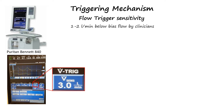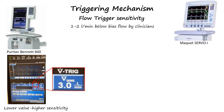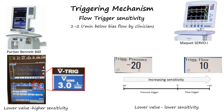Therefore, in Puritan Bennett models, setting a lower flow trigger value, such as 1 to 2 liters per minute, represents an increase in sensitivity, meaning a lower flow is required to trigger a mechanical breath. In contrast, in the Maquet Servo-I model, a lower trigger value means reduced sensitivity. The trigger is adjusted using a dial ranging from negative 20 to positive 10, with negative 20 being the least sensitive and 10 being the most sensitive.